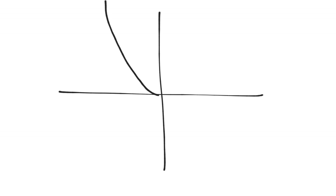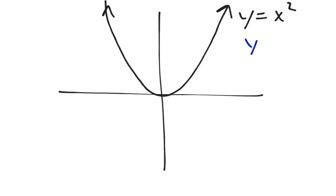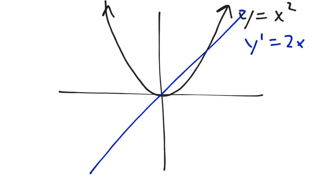In calculus, the functions we deal with aren't always straight lines — sometimes we have curved lines. The simplest curved line is a parabola, so we're going to look at the equation y equals x squared and go ahead and graph its first derivative. Remember that y prime is just 2x, so we'll graph that.